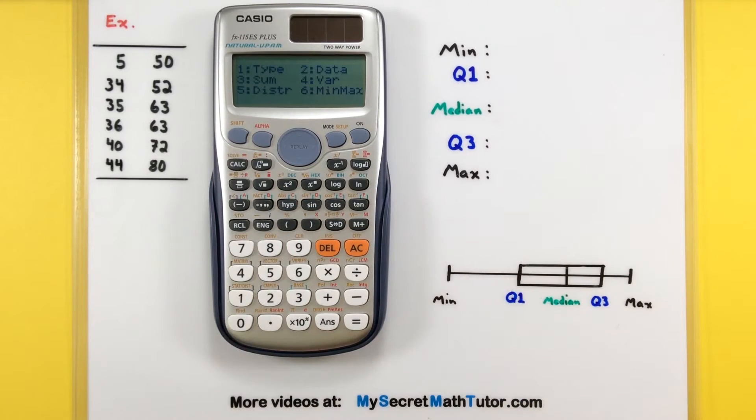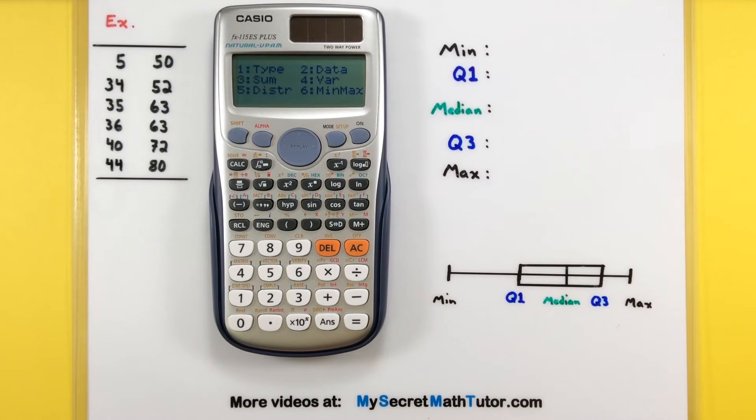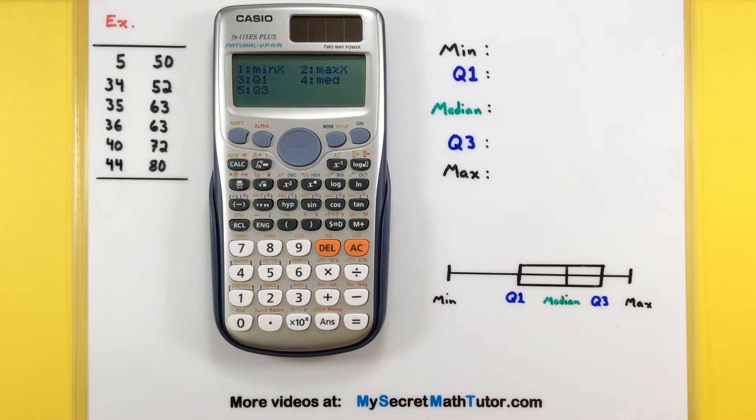Press shift one and number six is where you'll find all of these values. So let's go six where it says min max. And there's our five-number summary. Now you actually have to do one of these at a time. You can't just do all of them on the screen all at once. So let's go ahead and go down this list and grab them all.